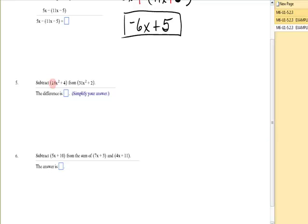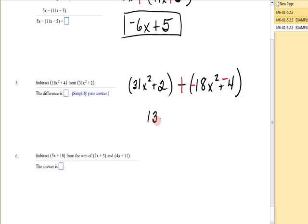You want to be very careful with expressions like number 5. It says subtract 18x² + 4 from 31x² + 2. The phrase 'subtract from' tells us to write the 31x² + 2 down first, and subtract from it 18x² + 4. Keep, change, change. What does that give me? 31x² - 18x² is 13x², and +2 and -4 is -2. So that's combining like terms.